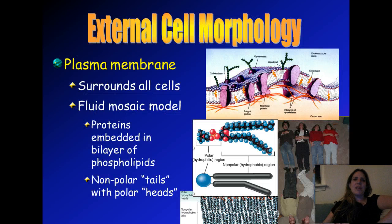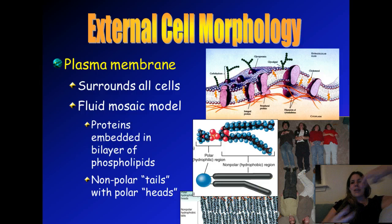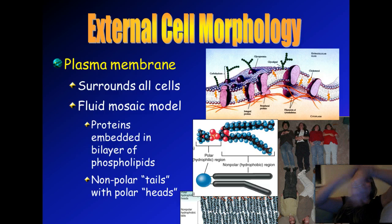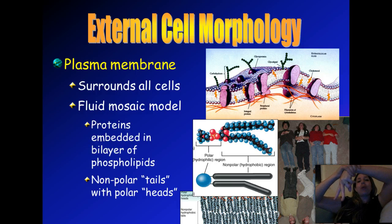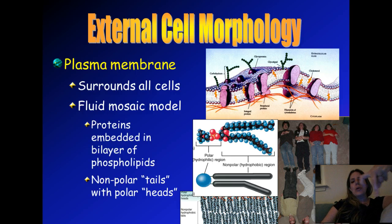Quick review of the plasma membrane: it's a phospholipid bilayer — two layers of phospholipids. Each phospholipid has a head made of glycerol, which is a polar molecule, and two fatty acid chains, one of which is kinked. Those fatty acid chains are nonpolar.